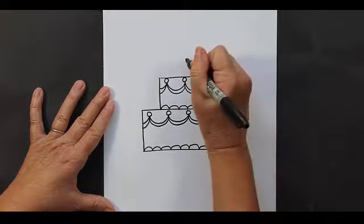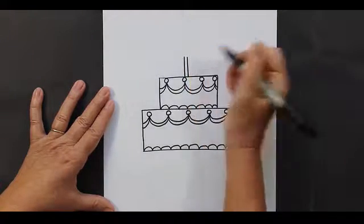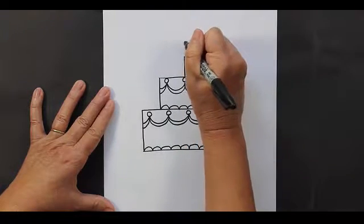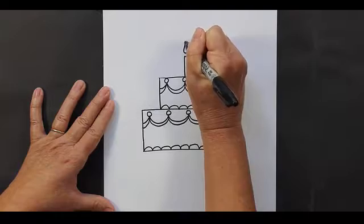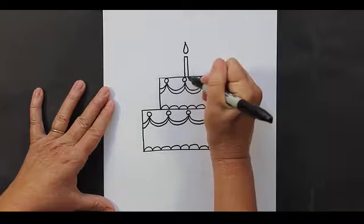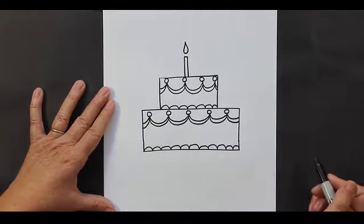We are going to put a candle on top of our cake, and let's say you're making this cake for a birthday card or something. You can think about how old the person is that you are going to be making the card for, and put that many candles on the top. So to make the candle, you just put two straight lines, close them up, and a teardrop shape at the very top for the flame.